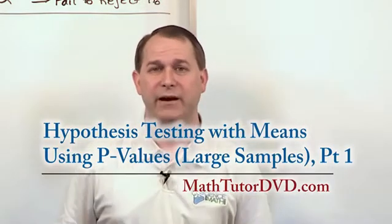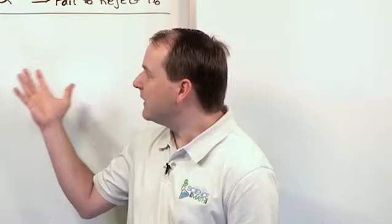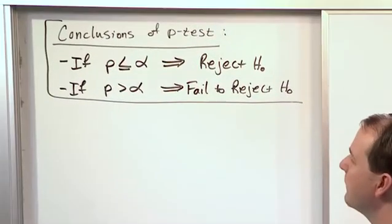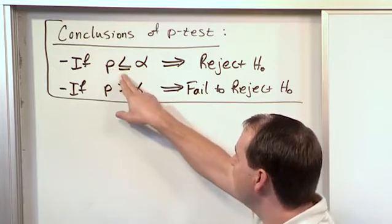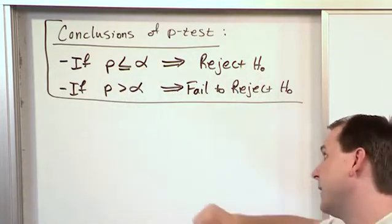We're going to be using the p-values that we have talked about in the last section. And I'm just going to leave this on the board. We just have this left over from the last lesson. Basically it says if the p-value is less than or equal to the level of significance, then we reject the null hypothesis.